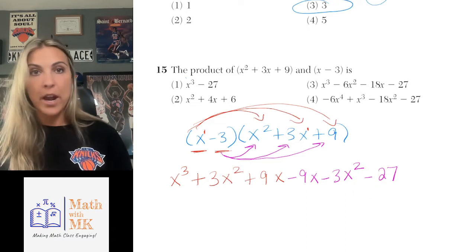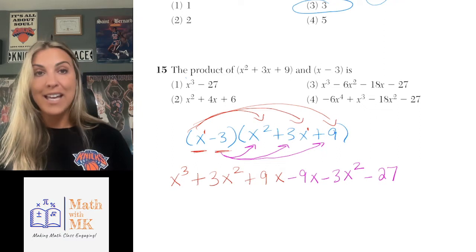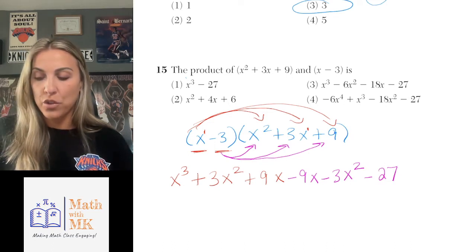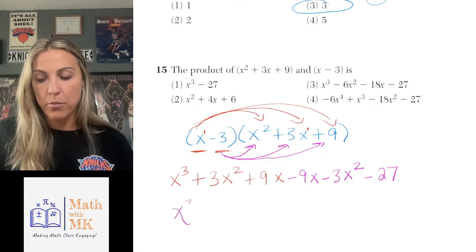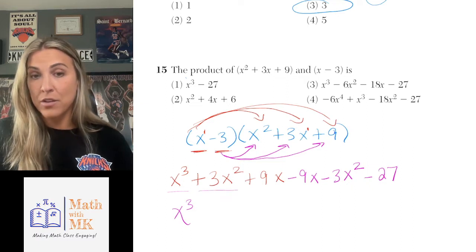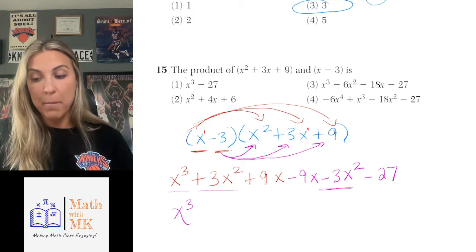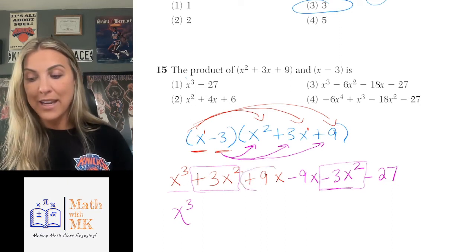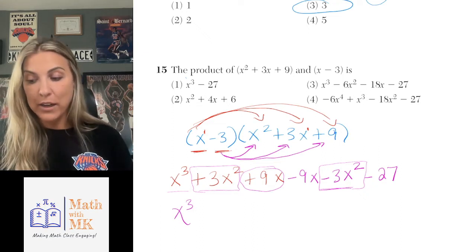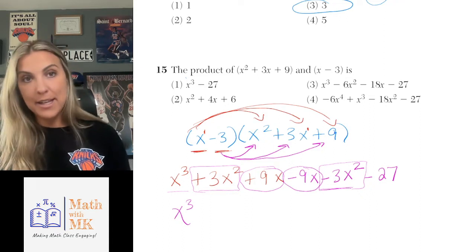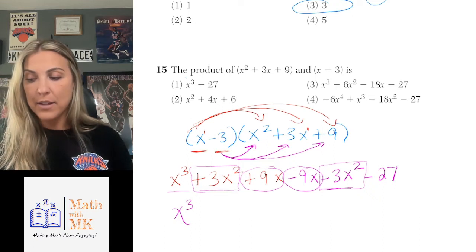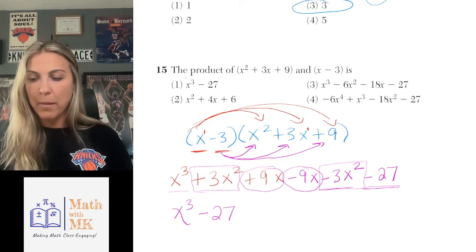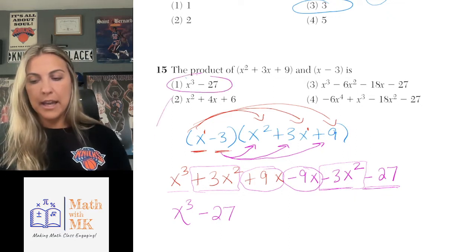Looking for like terms: there's no other x cubed term, so I bring that down. I have 3x squared and minus 3x squared — those cancel out to zero. I have positive 9x and minus 9x — those also cancel out to zero. And lastly I have the constant negative 27, with nothing else to combine it with, so I bring that down. Looking at the answer choices, answer choice number 1 looks exactly like our answer: x cubed minus 27.